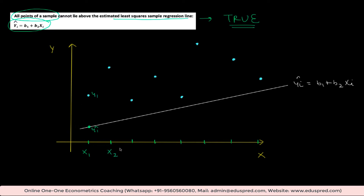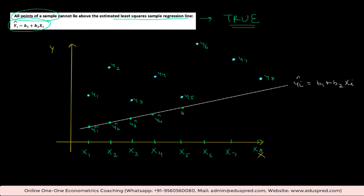Similarly, I can label the remaining actual data points as y3, y4, y5, y6, y7, and y8, and the x values as x1 through x8. We have only one independent variable with eight different values. Corresponding to these x values, the fitted values on the regression line are y3-hat, y4-hat, y5-hat, y6-hat, y7-hat, and y8-hat. So all the fitted values are below the actual data points in this scenario.